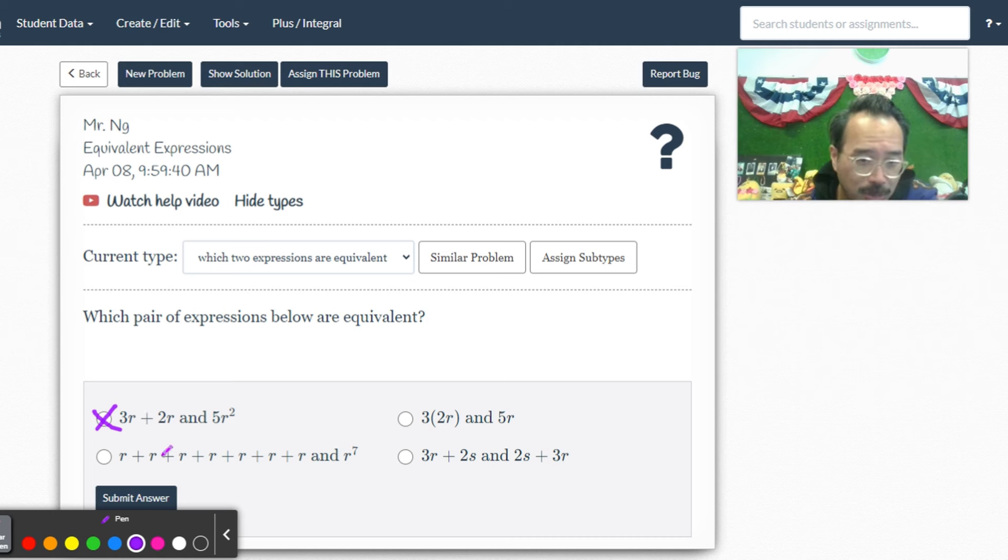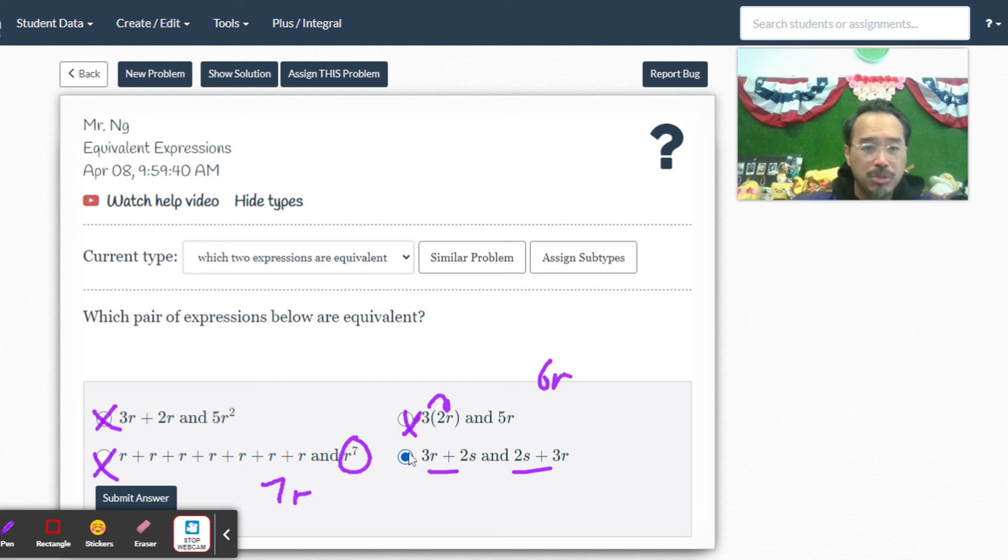This is not like Cristiano Ronaldo, so that's not it. 3 times 2r is 6r, not 5r. So I suppose that leaves us with this - same thing, commutative property. Okay, so hopefully this will put you on the right track.